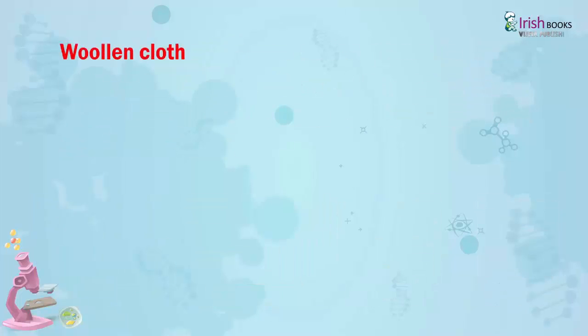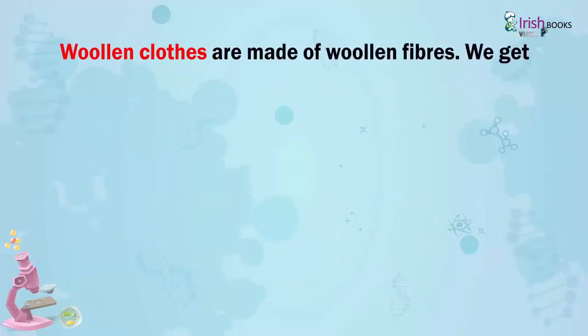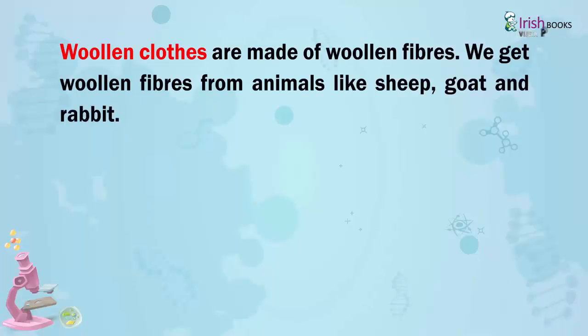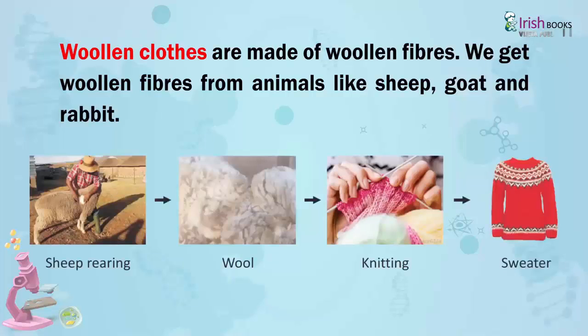Woolen clothes are made of woolen fibres. We get woolen fibres from animals like sheep, goat and rabbit.